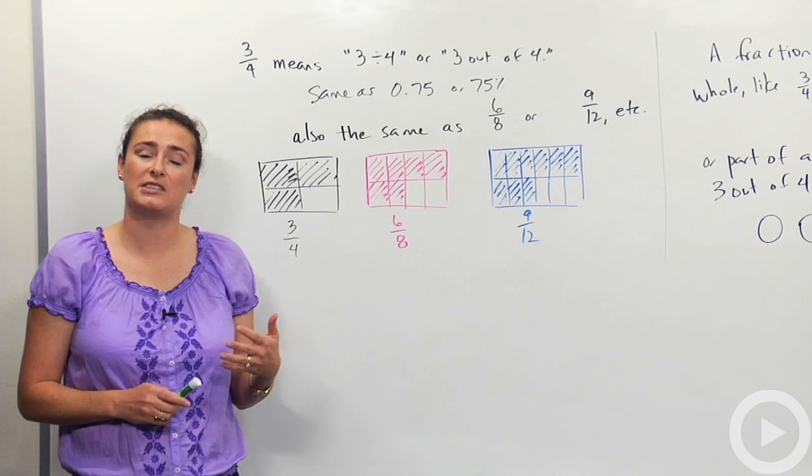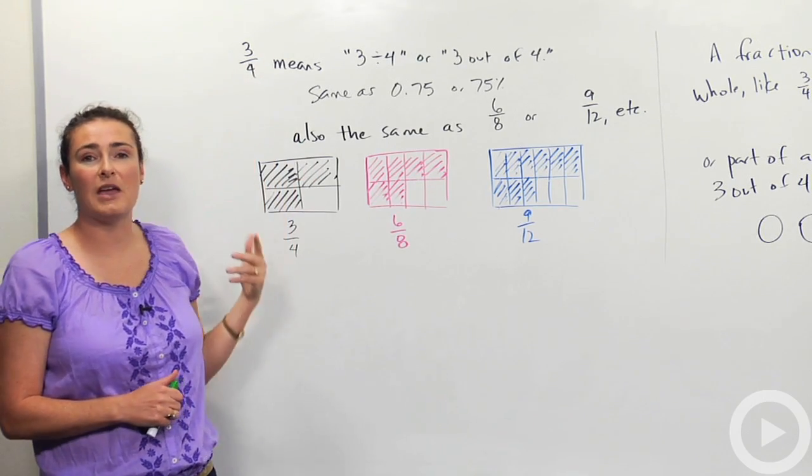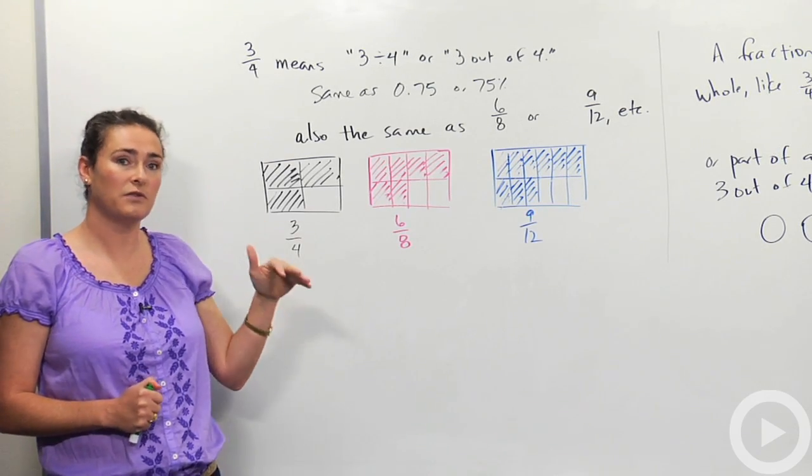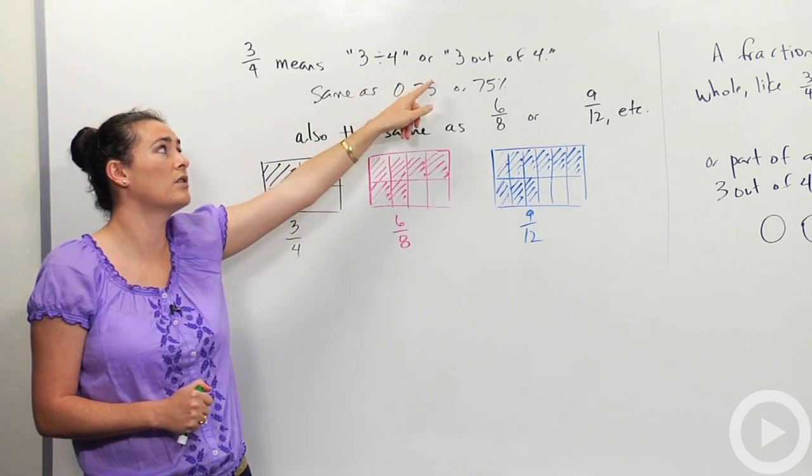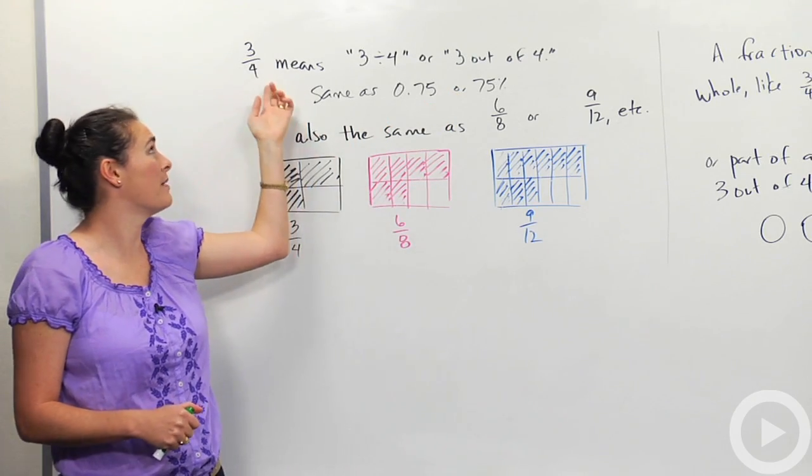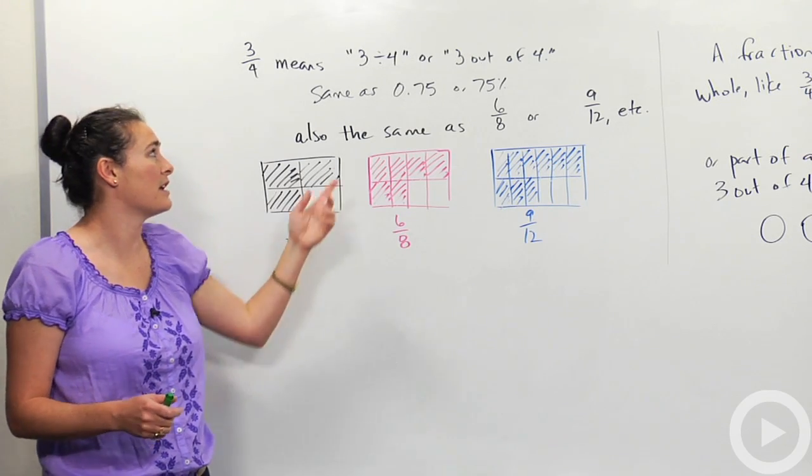So to begin with, we're going to talk about the fraction 3 fourths. Here it is, 3 fourths. And you may or may not know that a fraction bar means divide. 3 fraction 4 means 3 divided by 4 or 3 out of 4. You can read it either way. Also, when people see this, they usually say 3 fourths. So those are all different ways to say the same thing.